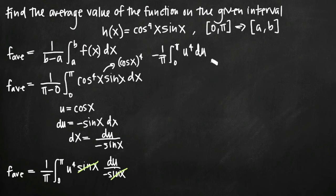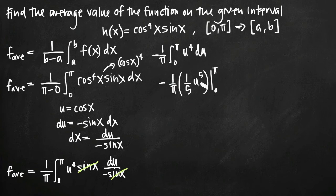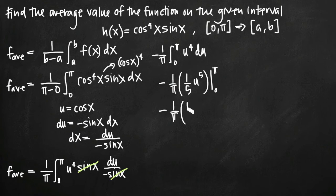We can easily take the integral of u to the fourth. We get negative 1 over pi times 1 fifth u to the fifth power, evaluated on the range 0 to pi. Now we plug back in for u, since u is cosine of x. Back-substituting gives us negative 1 over pi times 1 fifth cosine to the fifth of x.